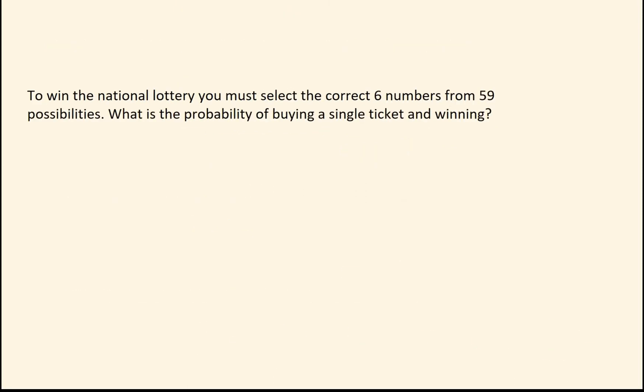I'll do one more example. So in a national lottery, you must select the correct six numbers from 59 possibilities. So therefore, the probability of buying just one ticket and winning. We can basically do this almost as if you imagine a tree diagram. So we want to get the right number each time. For the first chance of getting the right number, I have six correct numbers to pick from out of 59 numbers altogether.